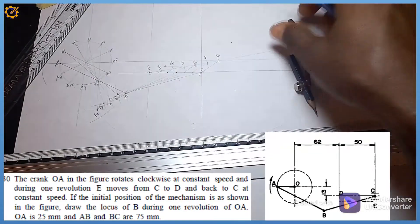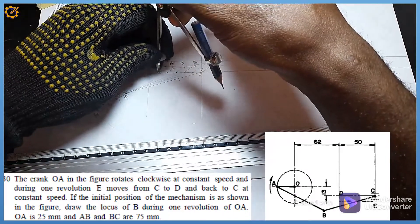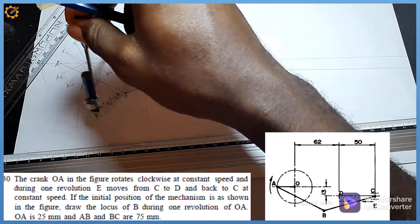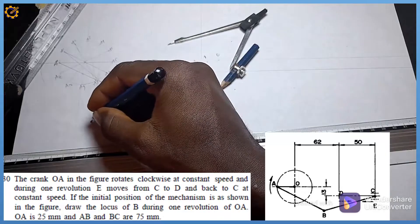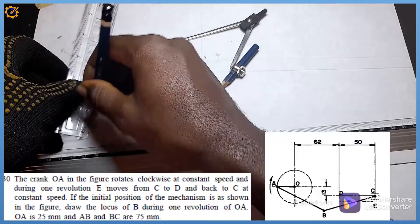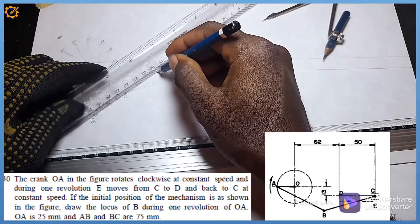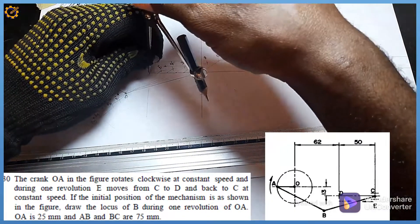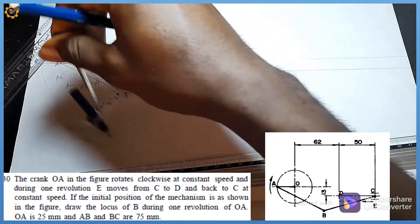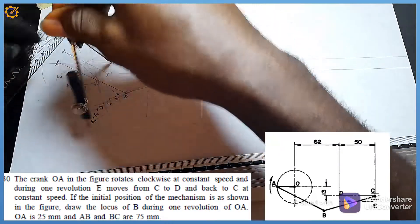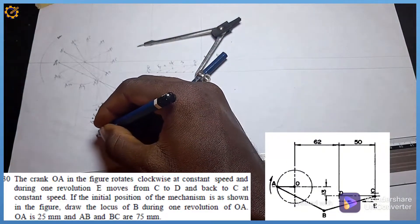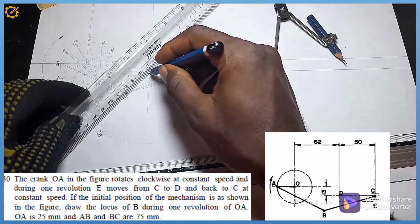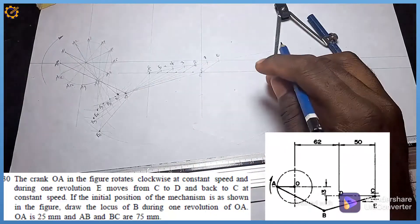So far I have B0, B1, B2, B3, B4. On C5 I draw my arc faintly, then on A5 with radius 75 I draw another arc — it intersects to give B5. I join B5 to A5, then C5 to B5. Next, on C6 I draw my arc faintly, then on A6 with 75 I strike the corresponding arc — that intersection is B6. I join B6 to A6 and D to B6.